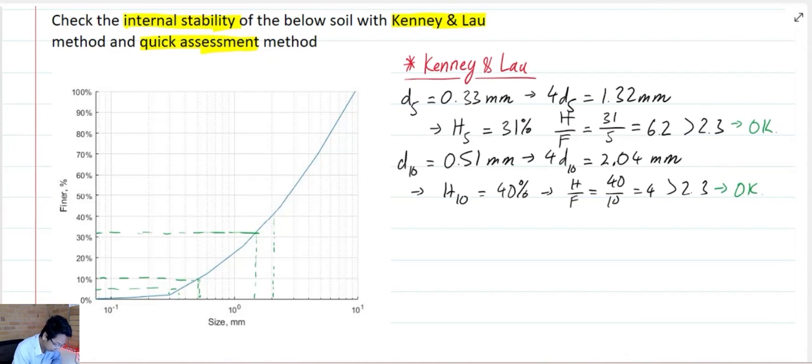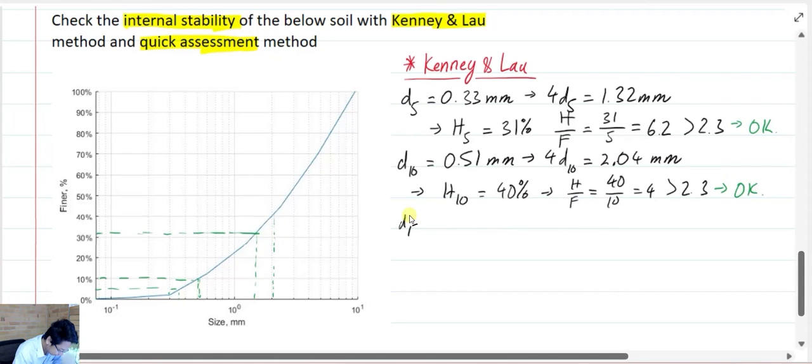Similarly, I repeat with D15. I have my D15 equal to 0.68 mm. And from here, I have my H over F equal to 49%.